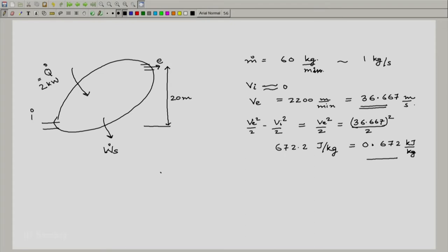What about G z e minus z i? We have been given that this is 20 meters. 20 meters is a reasonably large number, but G z e minus z i would still be a reasonably small number. Let me just calculate it. This is 9.81 meter per second square multiplied by 20 meters.